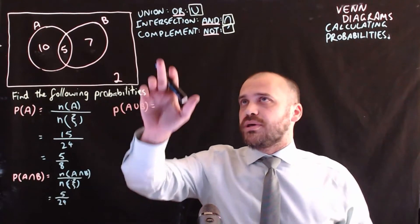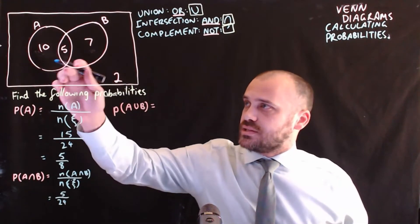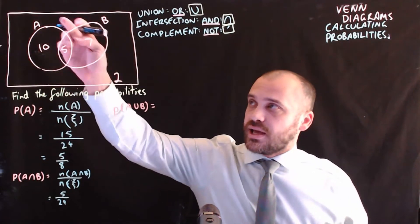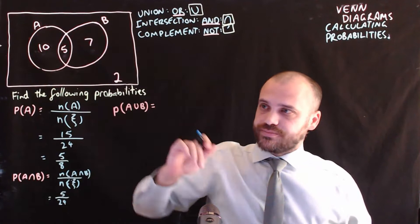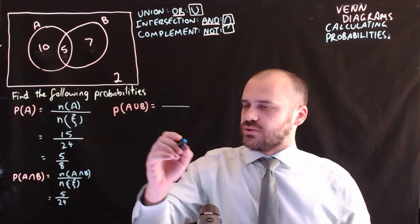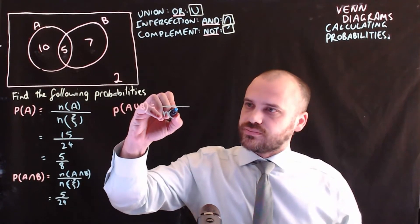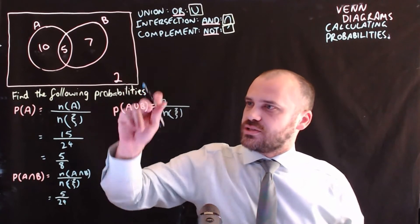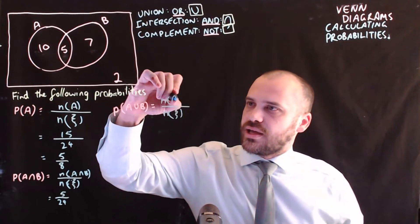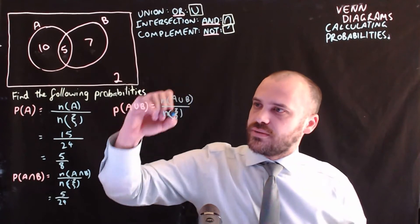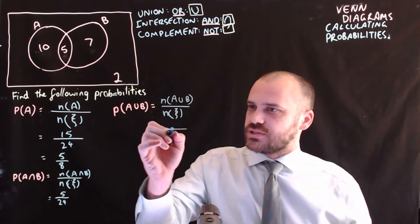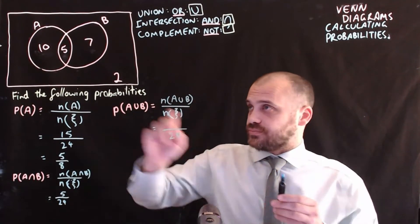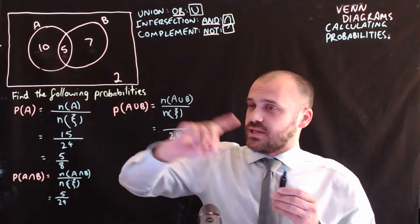Now, the probability of A union B — A or B. This is A, this is B, and this is A and B together — altogether it makes the union of A and B. The formula is the same as always: size of the sample space. The size of the universal set is 24, and the size of A union B is 10 plus 5 plus 7, which is 22.